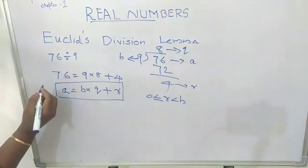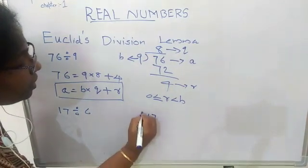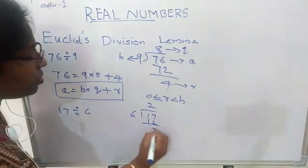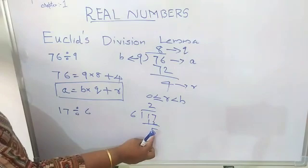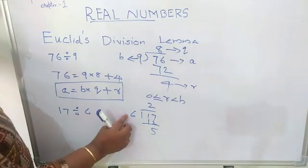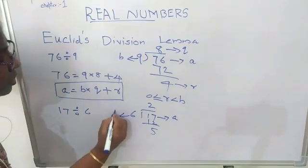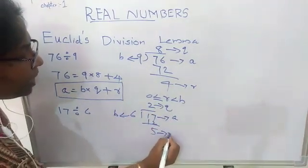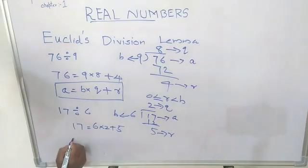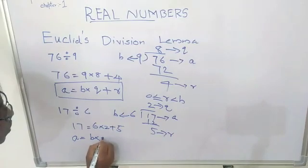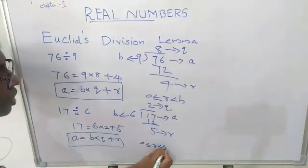Let us take more examples. Take 17 divided by 6. Here, 17 is the dividend, 6 is the divisor, 2 is the quotient, and 5 is the remainder. The remainder 5 is less than the divisor 6. So, 17 is A, 6 is B, 2 is Q, and 5 is R. Therefore, 17 is equal to 6 into 2 plus 5, or A is equal to B into Q plus R, where 0 less than or equal to R less than B.